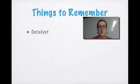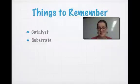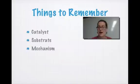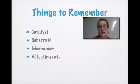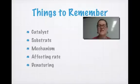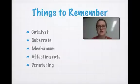Things to remember: the word catalyst and how it applies to enzymes; what a substrate is and how to identify an enzyme and substrate; the mechanism — how do enzymes work and do their jobs; the four ways we can affect the rate of enzyme function; and what denaturation means and how it happens. If you have any questions, jot them down — we're going to be working with this all next week. Don't forget to take the quiz, and I'll see you tomorrow. Good night.